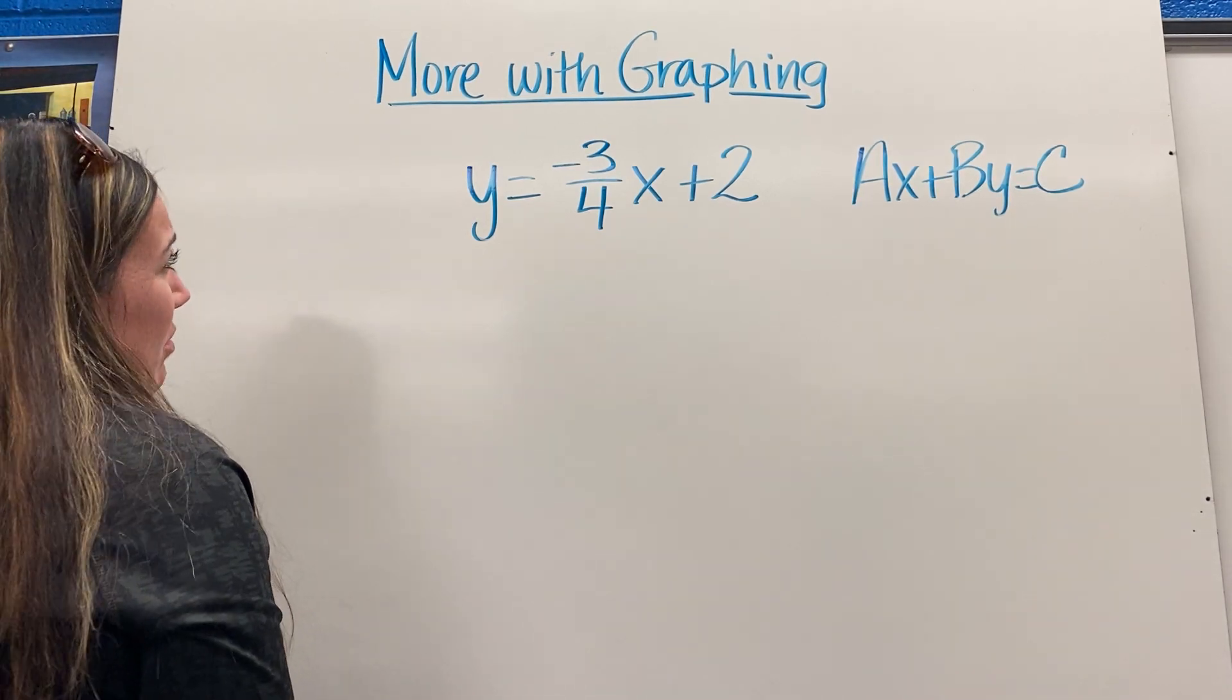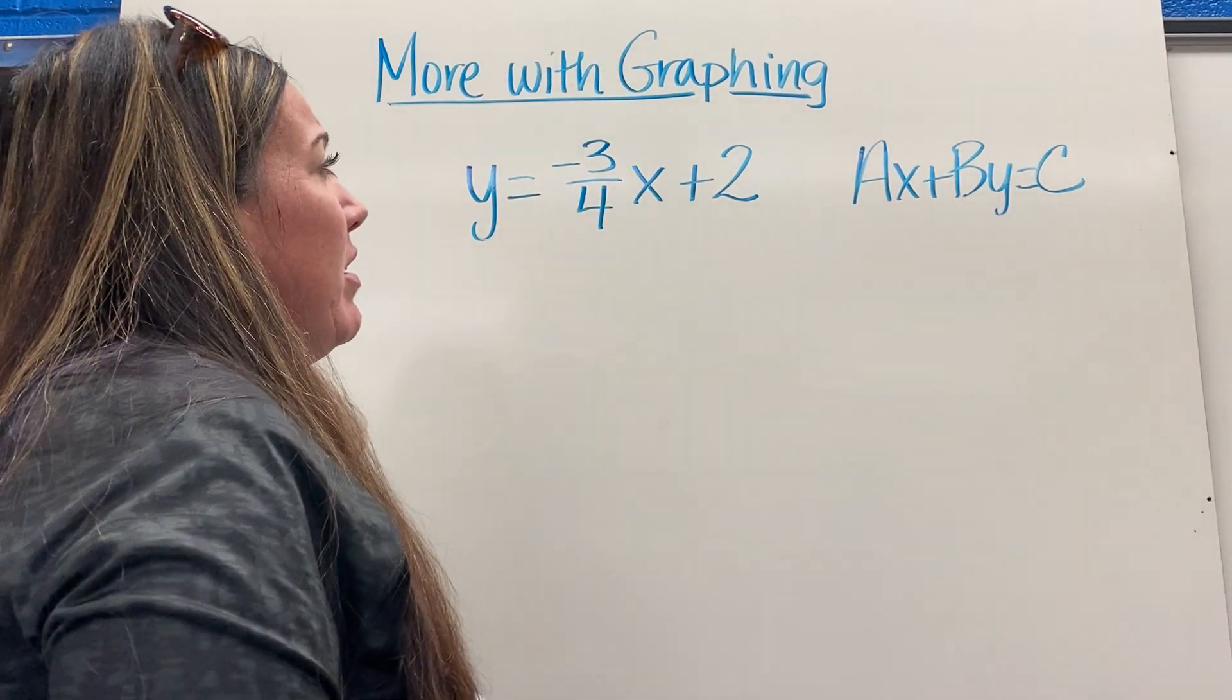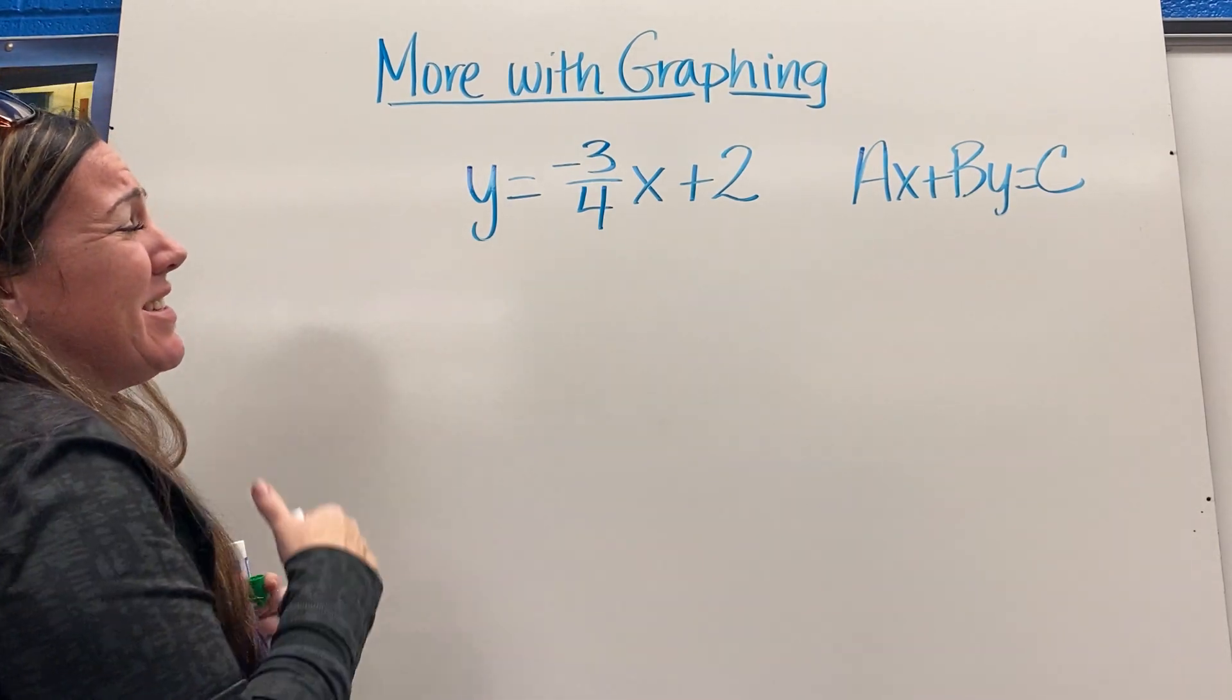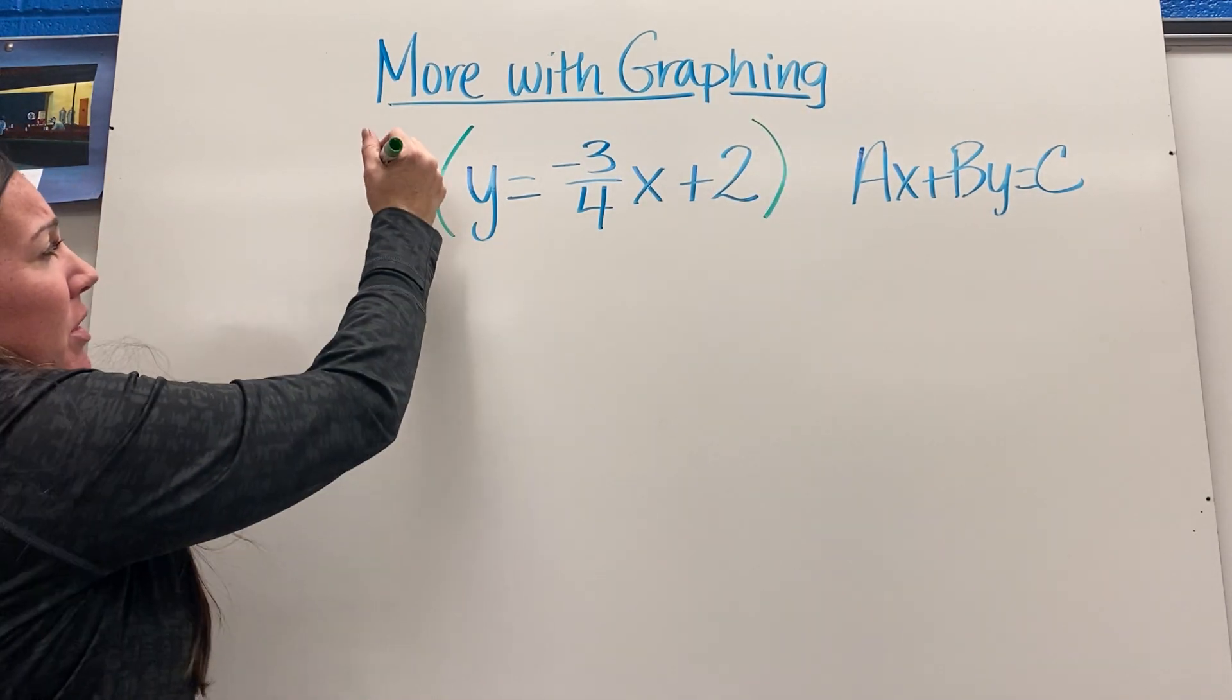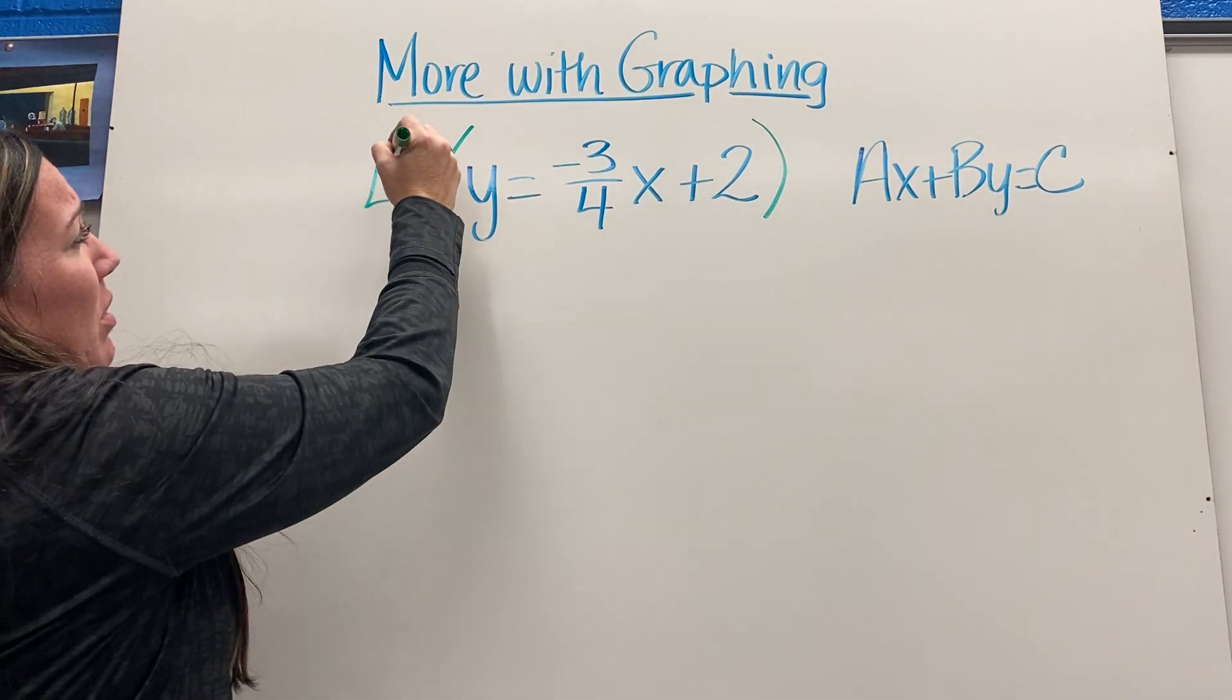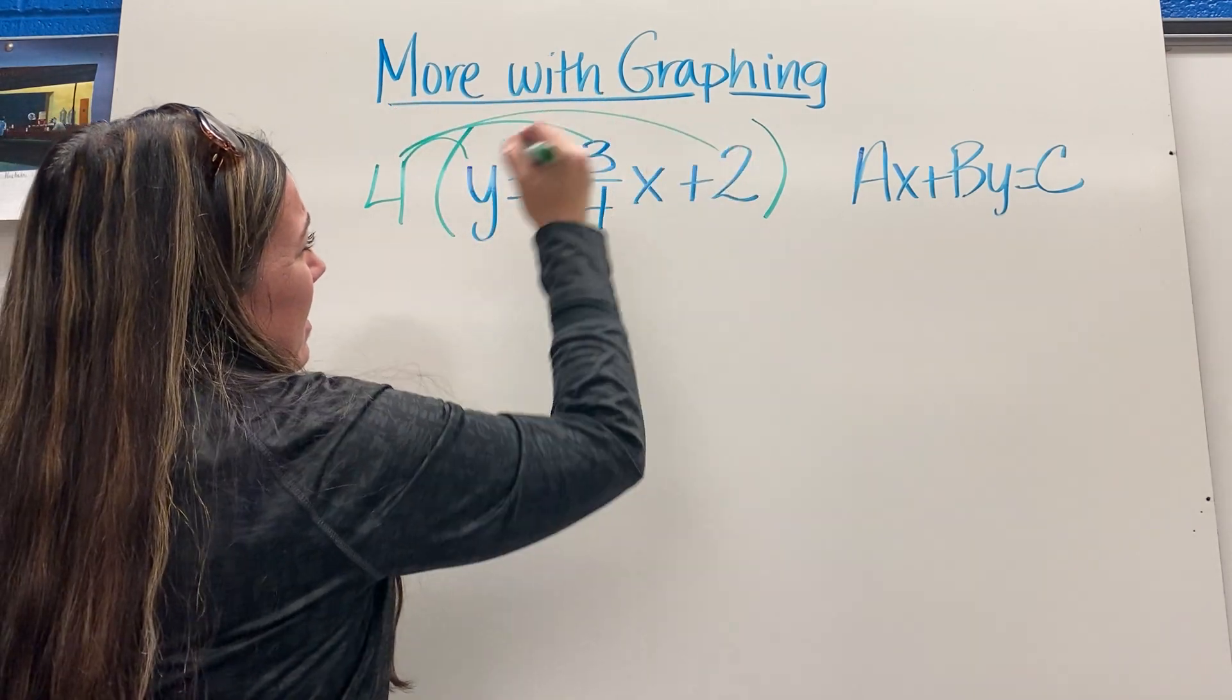If you remember when we talked about equations, we said we want the same denominator on everything. If I'm going to clear my fractions from this, I need to multiply the entire thing by 4. So I put parentheses around the whole thing because I need to think about everything that's multiplied by 4. This does, like distribution, this does, and this does.